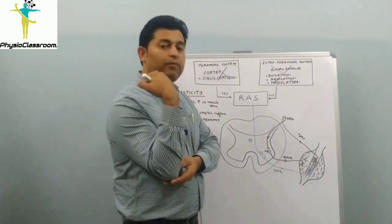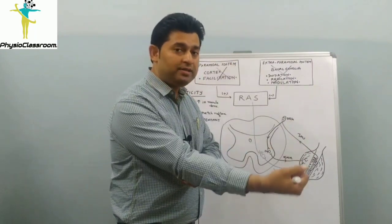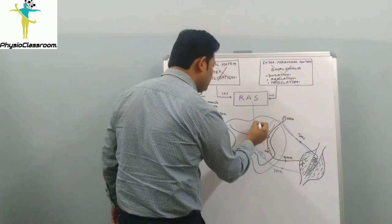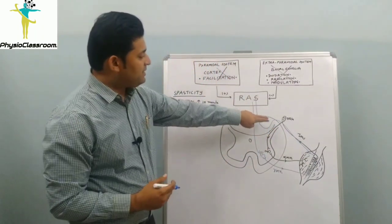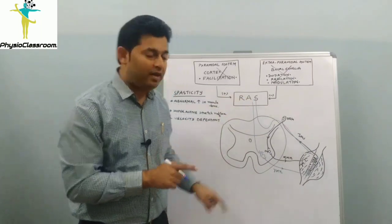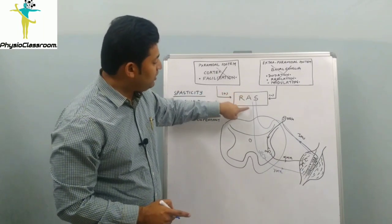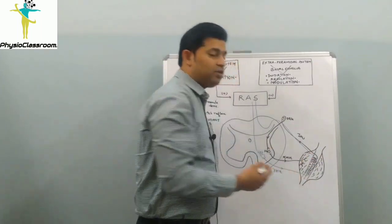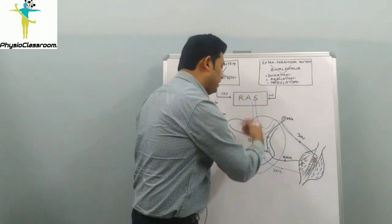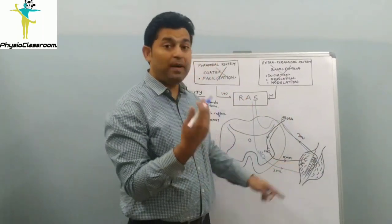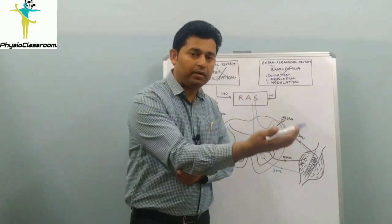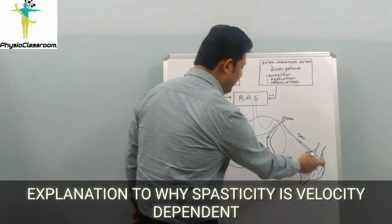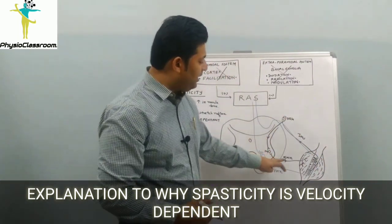If we move a spastic joint more vigorously, it stimulates many proprioceptors in the joint. These travel through the dorsal column into the brain stem, and this sensation is perceived by the reticular activating system. In response to this increased afferent input, reticular discharges to the gamma motor neuron increase further, intrafusal fiber tension increases, conduction through the muscle stretch reflex increases, and the spastic muscle offers even more resistance to movement.